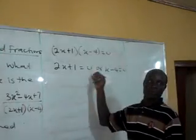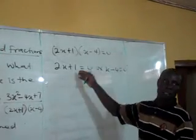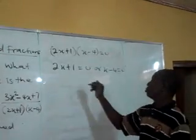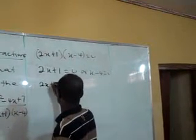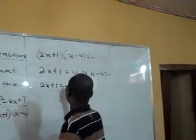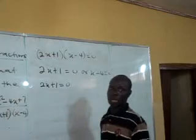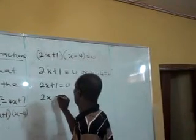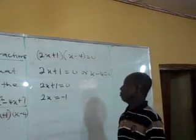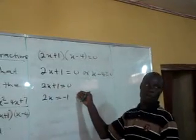Now you will solve these two equations separately. 2x plus 1 equals to 0. That's the first one we are taking care of. With that, we have 2x equals to minus 1 by taking this one across the bridge.